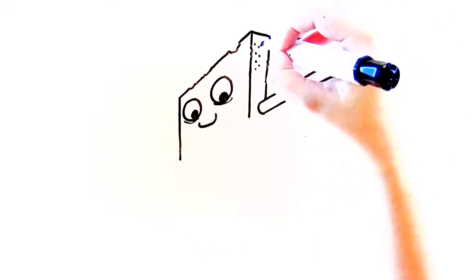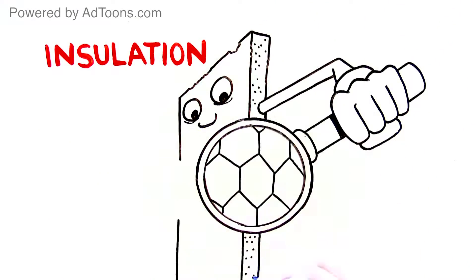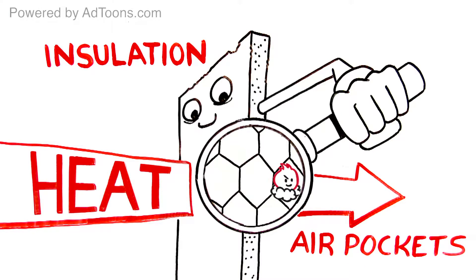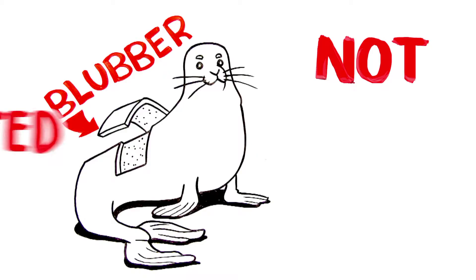By wrapping a home in a blanket of insulation, this transfer of heat is slowed down by thousands of tiny air pockets. But here's the deal. Not all insulation is created equal.